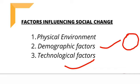Technology ke factors ki baat karein toh technology ne social change laane mein bahut bada role play kiya hai. Pehle joint family raha karti thi, ab nuclear family rehti hai — kyunki logon ko city ki taraf migrate karna pada. Technological factors, house and physical environment sab milke social change ko influence karte hain.